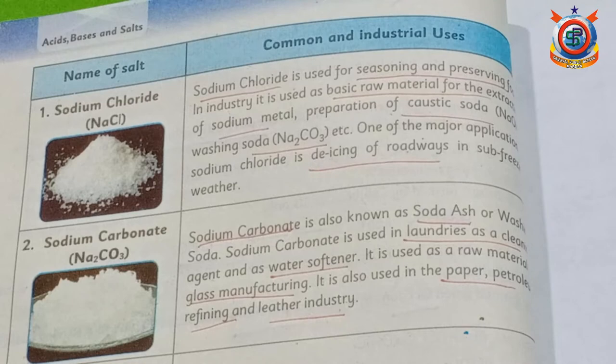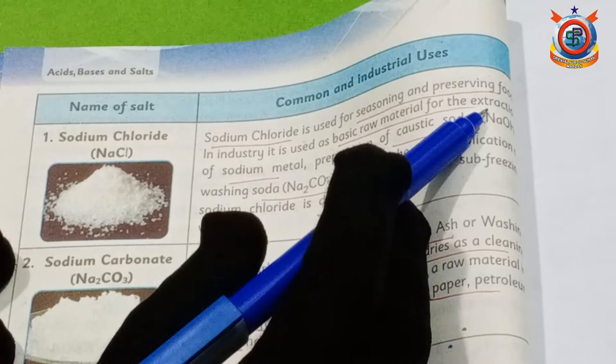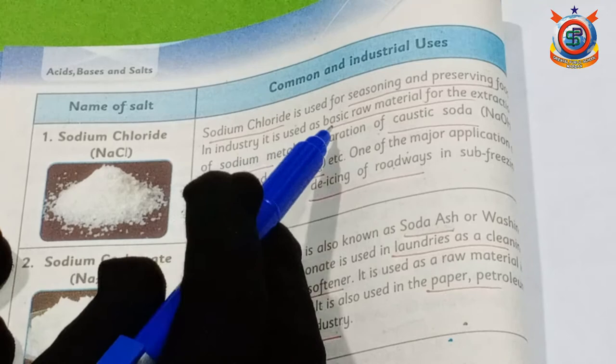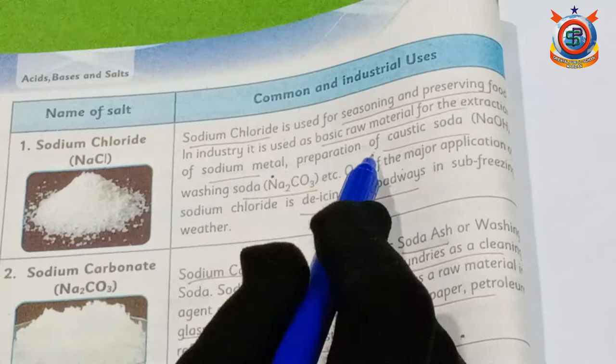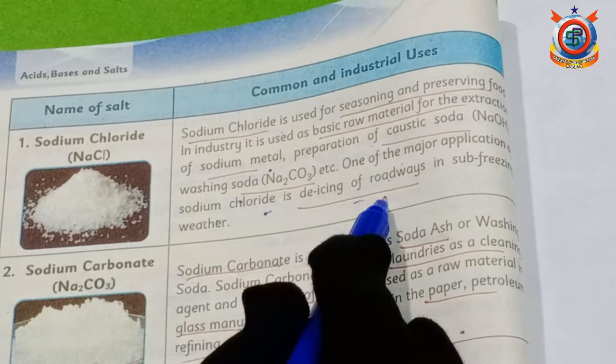The first salt is sodium chloride. Sodium chloride is used for seasoning and preserving food items. In industry, it is used as a basic raw material for the extraction of sodium metal, the preparation of caustic soda and washing soda. One of the major applications of sodium chloride is the de-icing of roadways in sub-freezing weather.